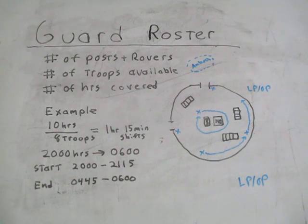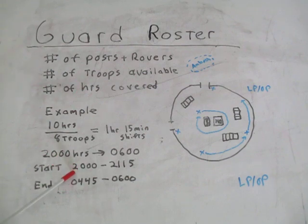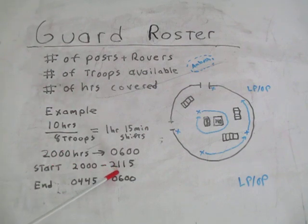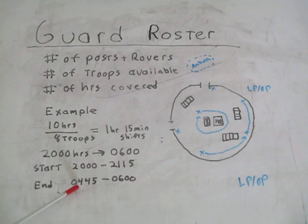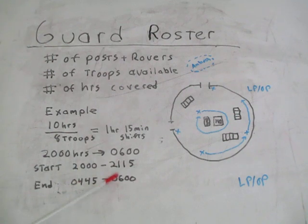The first guard rotation starts at 2000 hours and ends at 2115 hours. The final guard shift starts at 0445 and ends at 0600 hours.